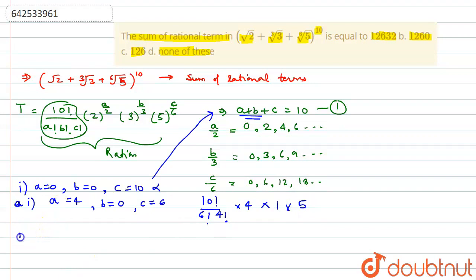Now, the second combination which suits the equation is a equal to 10, b equal to 0, and c equal to 0. Because again, if we put the value of a, b, c in this equation, it is satisfied. So the coefficient will be 10 factorial by, this will be only 10 factorial, into 2 to the power 5, into 1, into 1. This is the second one.